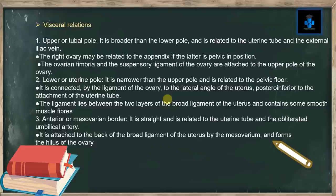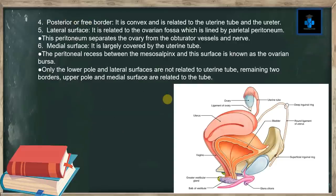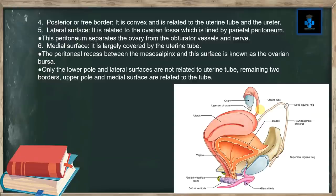Number three, the anterior or mesovarian border is straight and is related to the uterine tube and the obliterated umbilical artery. It is attached to the back of the broad ligament of the uterus by the mesovarium and forms the hilus of the ovary. Number four, the posterior or free border is convex and is related to the uterine tube and the ureter. Number five, the lateral surface is related to the ovarian fossa which is lined by parietal peritoneum. This peritoneum separates the ovary from the obturator vessels and nerve.